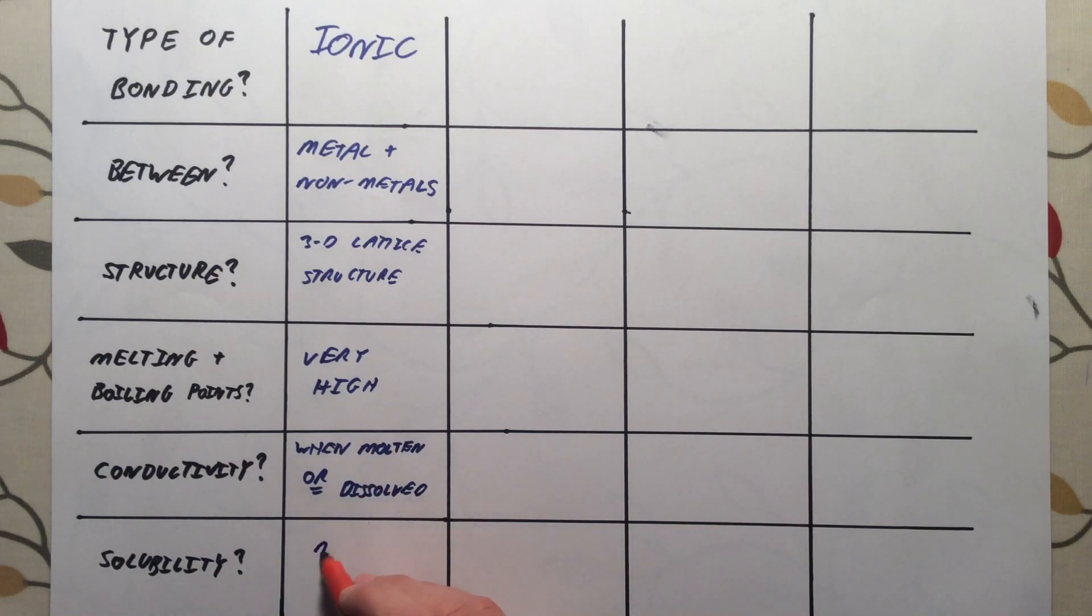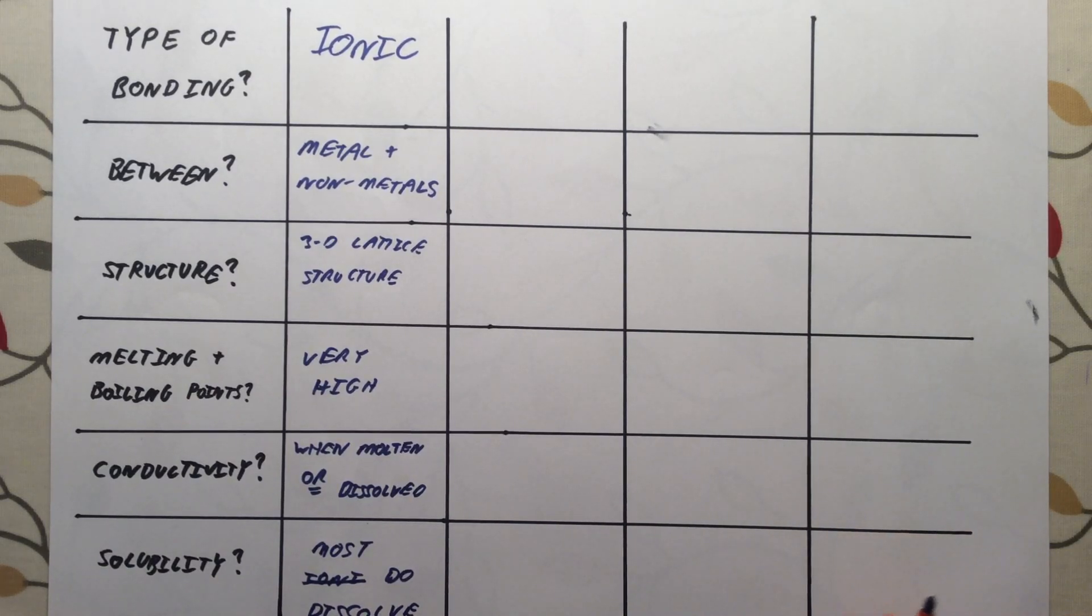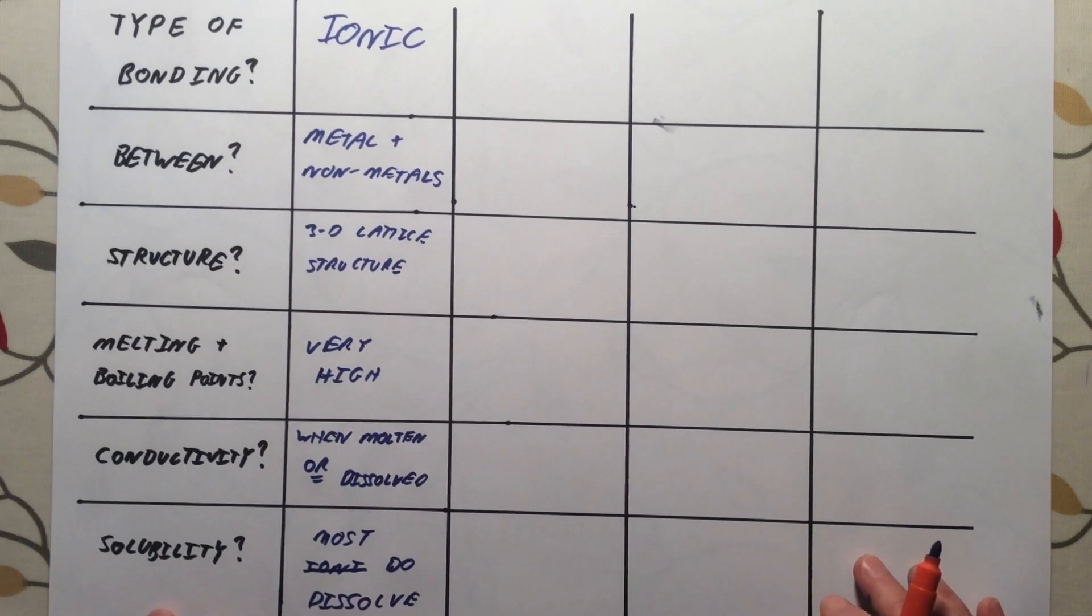Solubility, most ionic compounds do dissolve. We have met some examples which don't. If you look at our solubility rules video, you will see those. But most ionic compounds do dissolve.